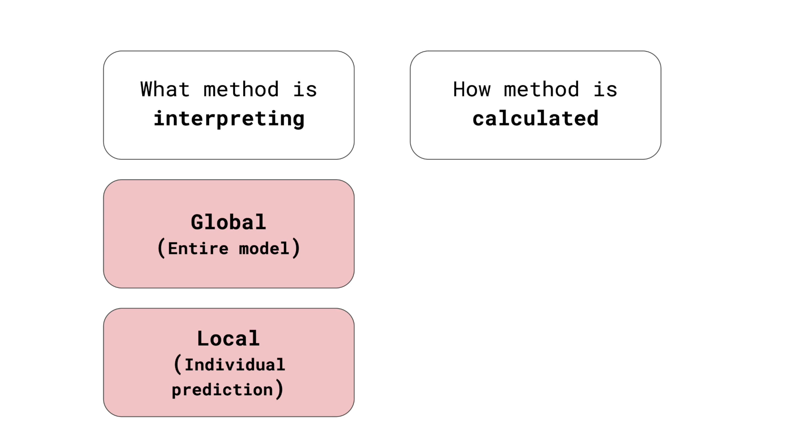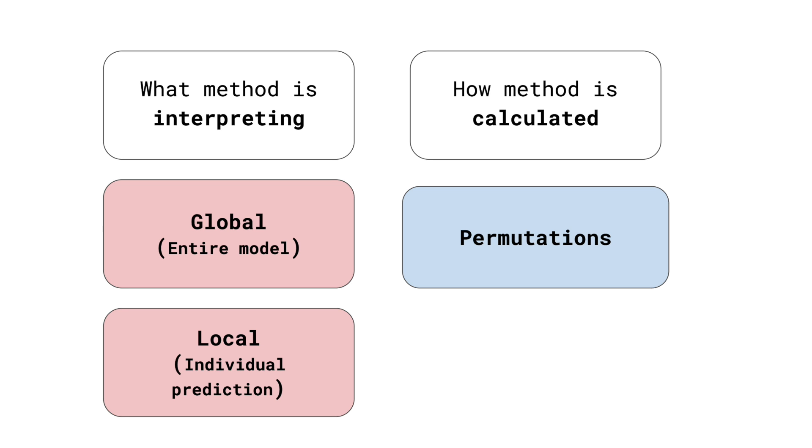The second way we can classify methods is by how they are calculated. Permutation methods involve changing input data and measuring changes in model predictions. The exact way we do permutations can differ — we can randomly shuffle the feature values, sample from a feature's distribution, or from all the values in a feature's range. We will discuss the first approach and general limitations of permutations in a later video. This is important, as permutations underlie most model agnostic methods.